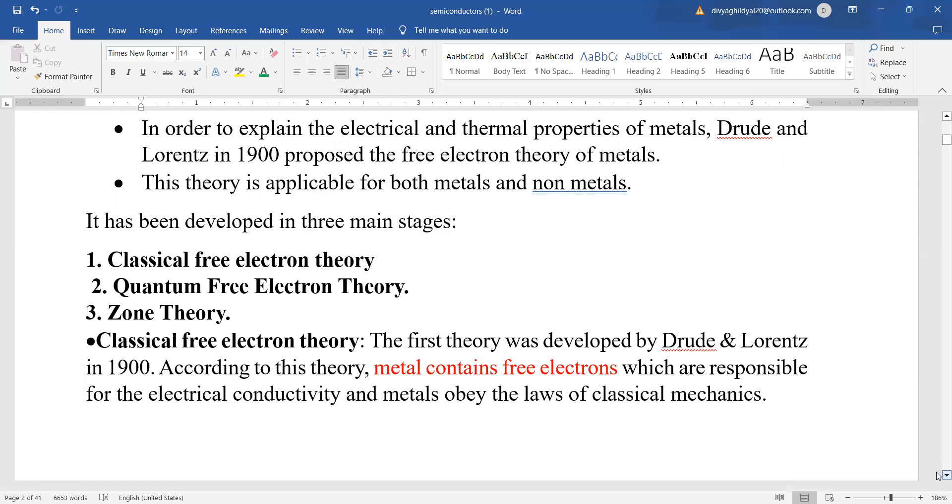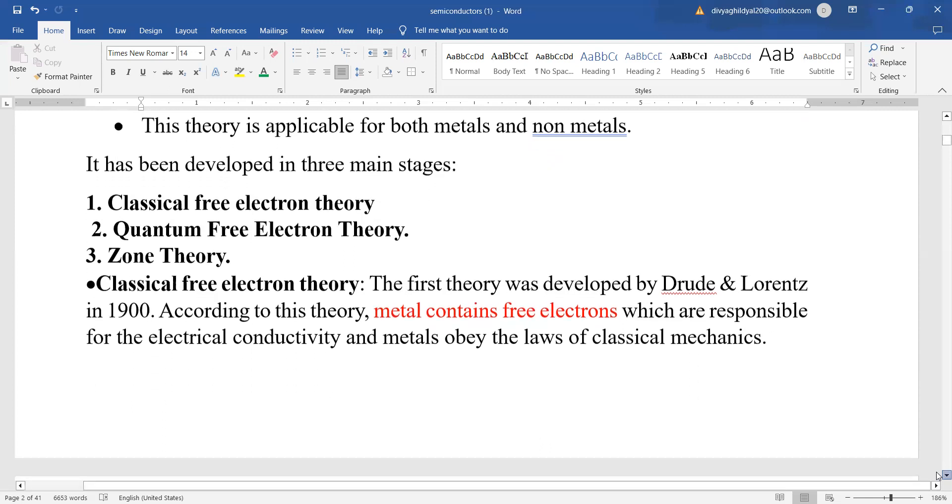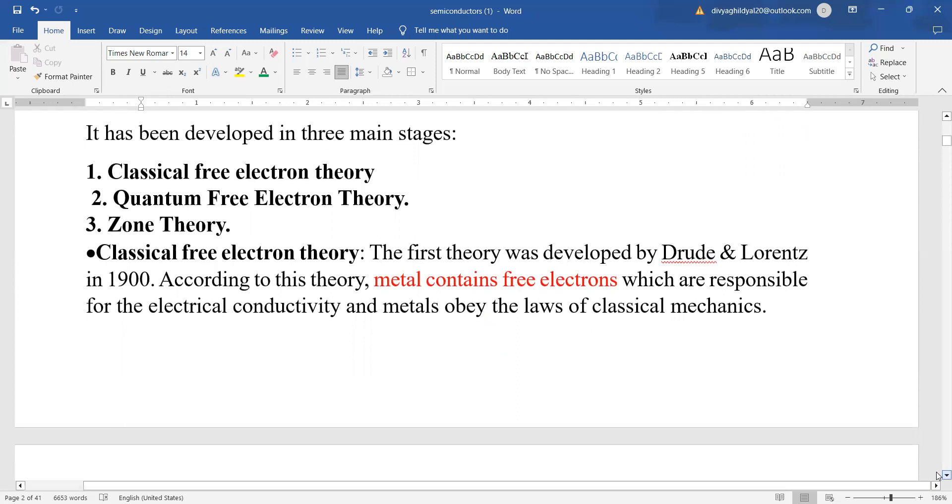This theory is applicable for both metals and non-metals. It was developed in three main stages: beginning with classical free electron theory, quantum free electron theory, and the zone theory. Maximum number of questions asked are where you are expected to explain the free electron theory, the advantages, and the disadvantages. Let us begin.